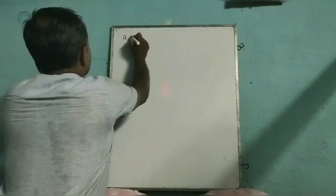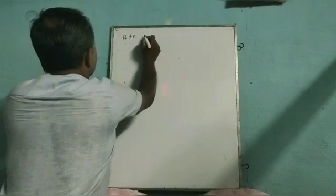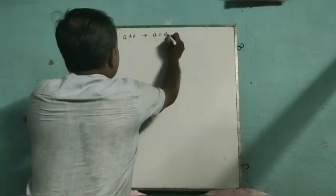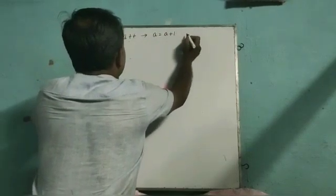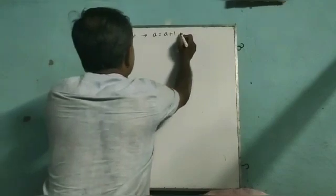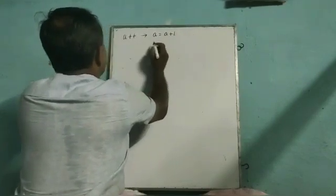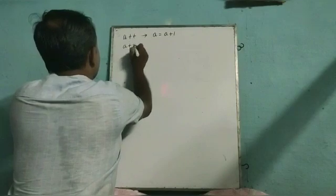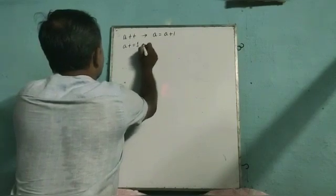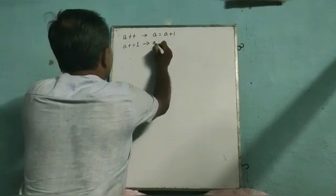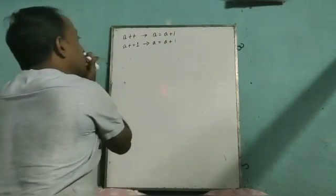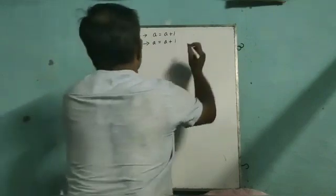We have seen a++ in the previous example. a++ means a equal to a plus 1, which can also be written as a plus equal to 1. Both have the same meaning.